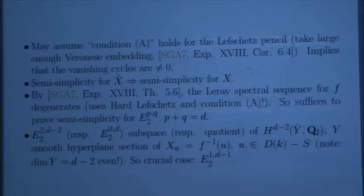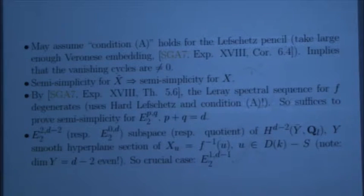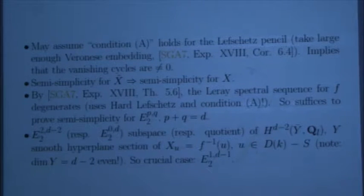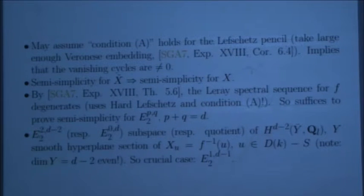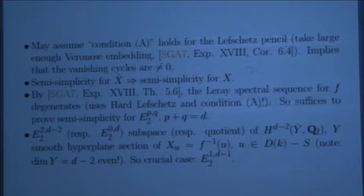But still, if F were smooth projective, this would be Deligne's argument for the degeneration of this kind of spectral sequence. It's not quite smooth, but it still works. So the spectral sequence degenerates. To prove semi-simplicity, it's sufficient to prove it on the E_2 term, E_2^{p,q} for p+q = D. The base has dimension 1, so there is just p = 0, 1, 2.